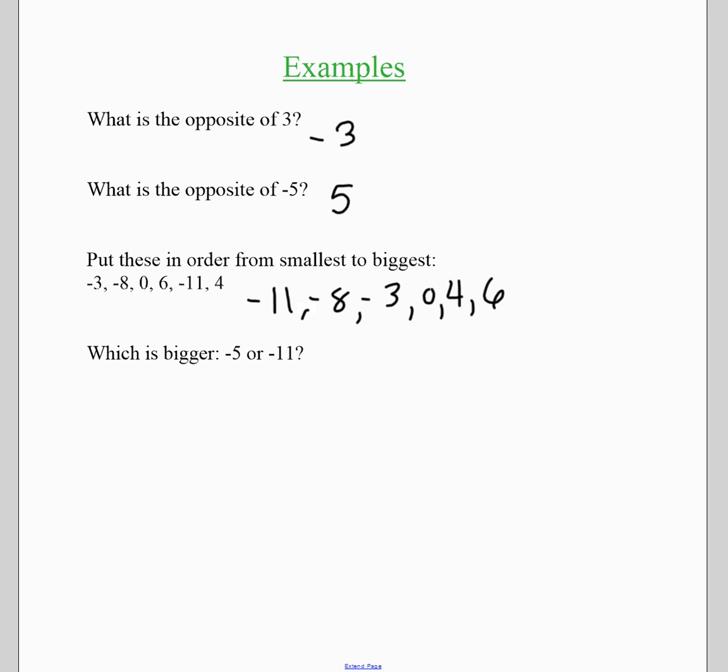So again, be really careful with integers, the bigger the actual number part gets, the further away from zero it is, which means it's the smallest. So for example, which one's bigger, negative five or negative 11? Negative five is bigger because it is closer to zero.